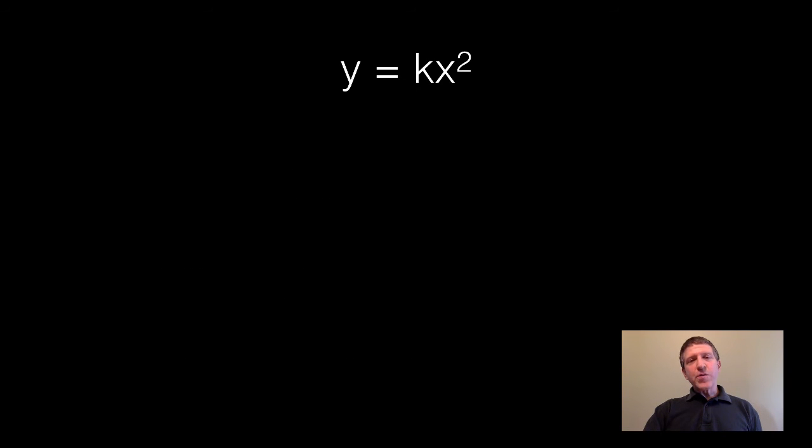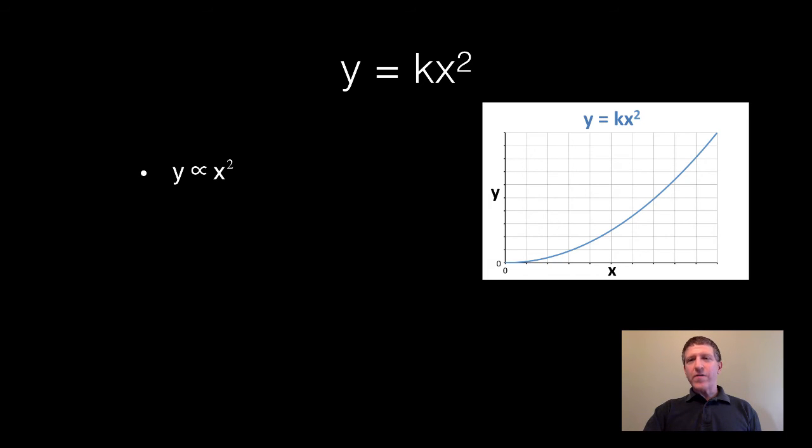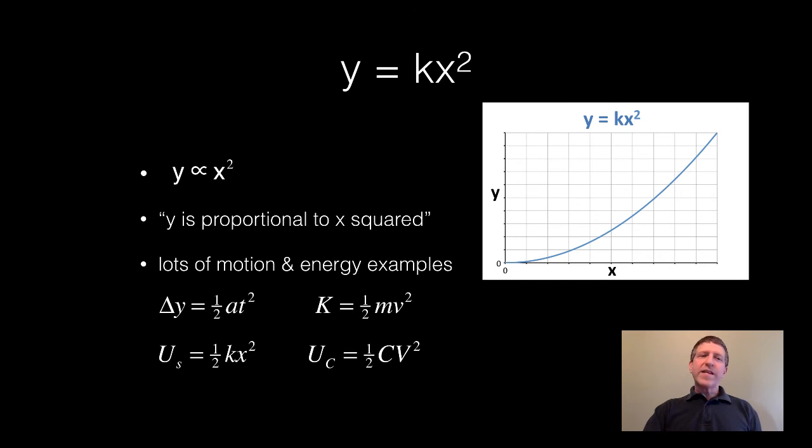Another common relationship is y equals k x squared. You could say y is proportional to x squared. This is what that graph looks like and that's the way you'd say it. There are a lot of examples of this kind of relationship. Here's a few for motion and energy.